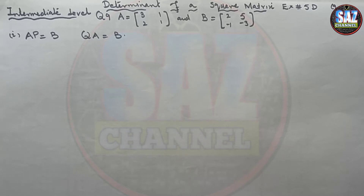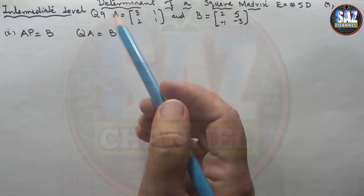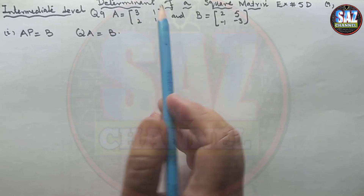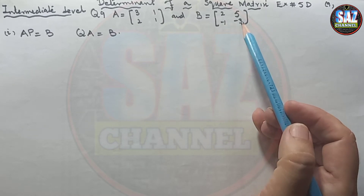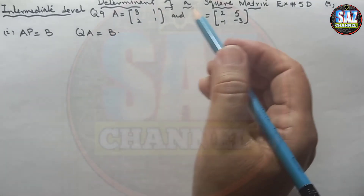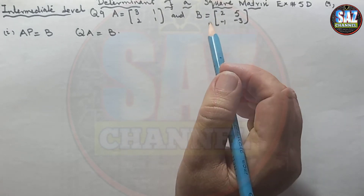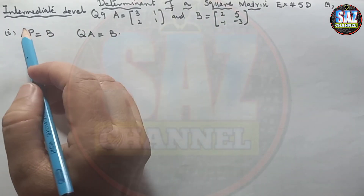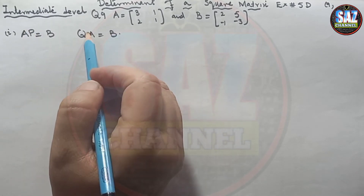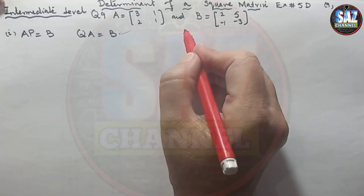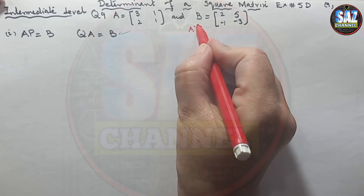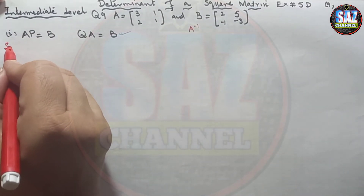Let's move to Question 9. The question says: given that matrix A has entries 3, 2, 1, 1 and matrix B has entries 2, −1, 5, −3, write down the inverse of matrix A and use that inverse to solve the equations AP = B and QA = B. So we must first find the inverse of matrix A and then use it to solve the further equations.